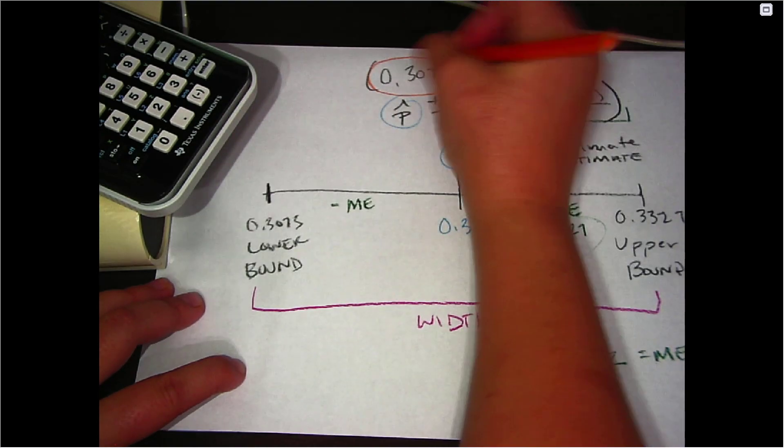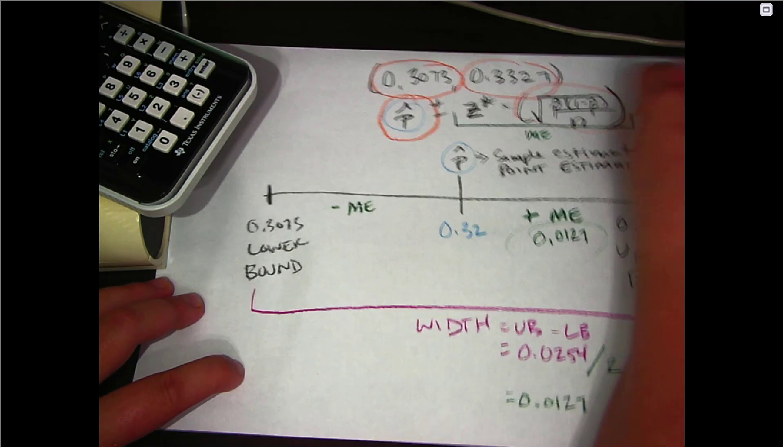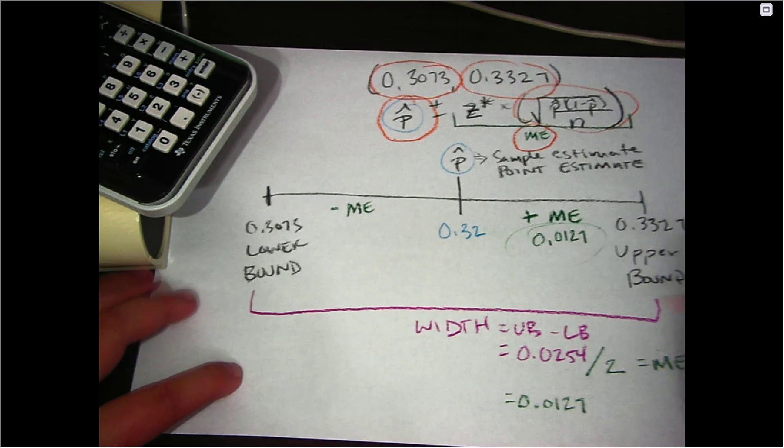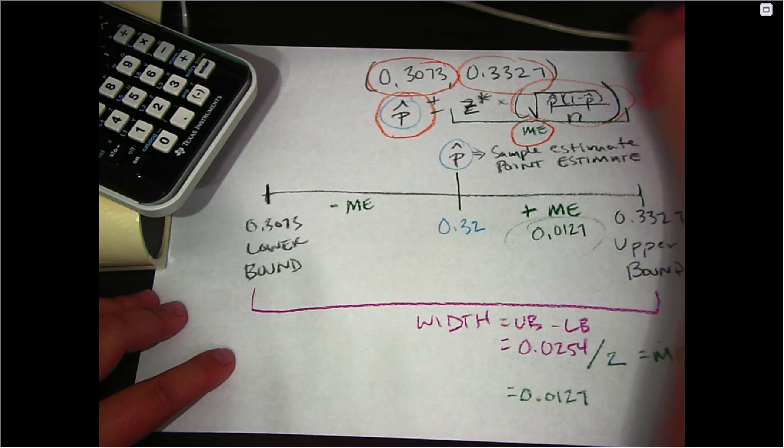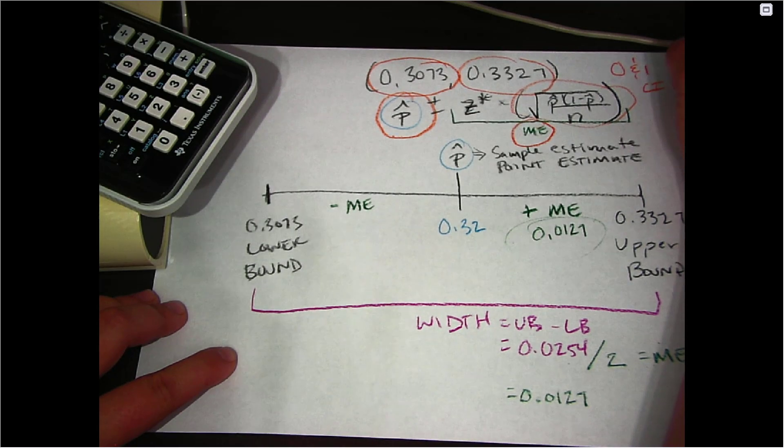But when you calculate these confidence intervals, your lower bound, your upper bound, p hat, the standard error, and the margin of error will all always be between 0 and 1 when you're doing a confidence interval for p.